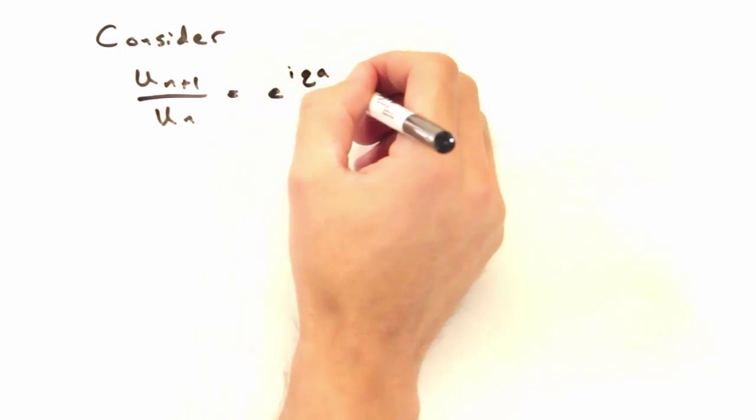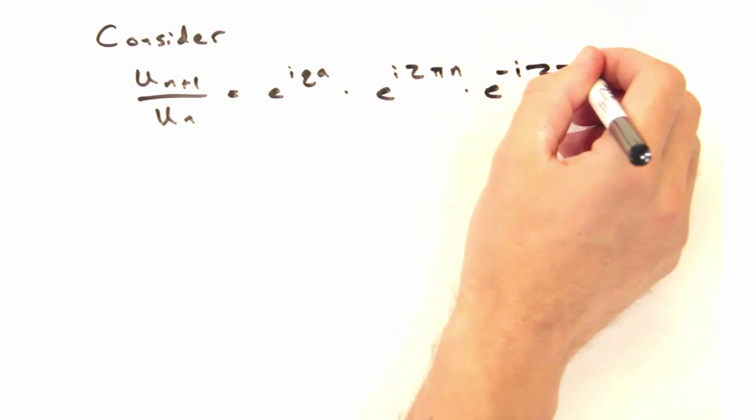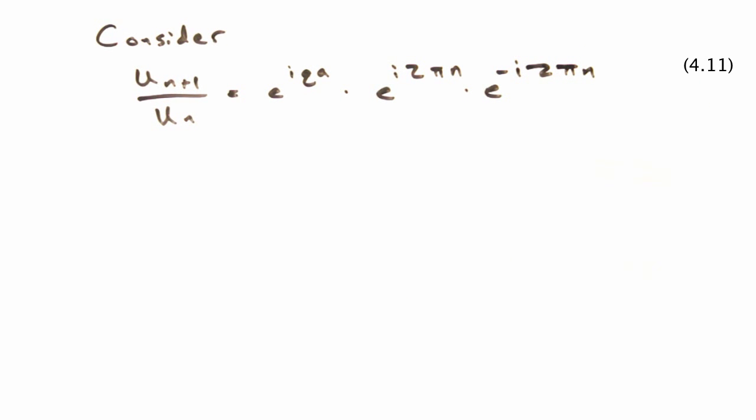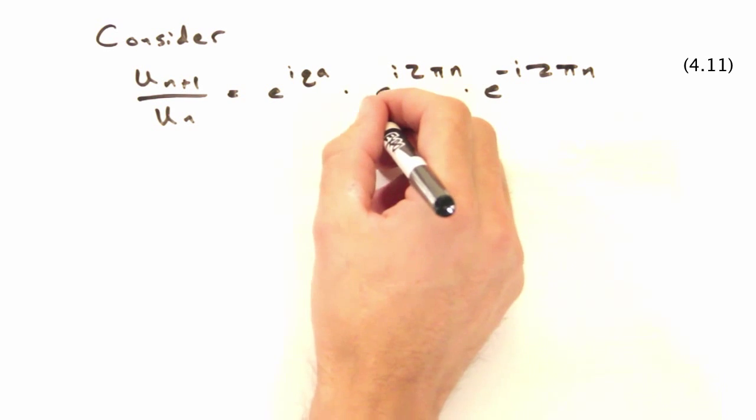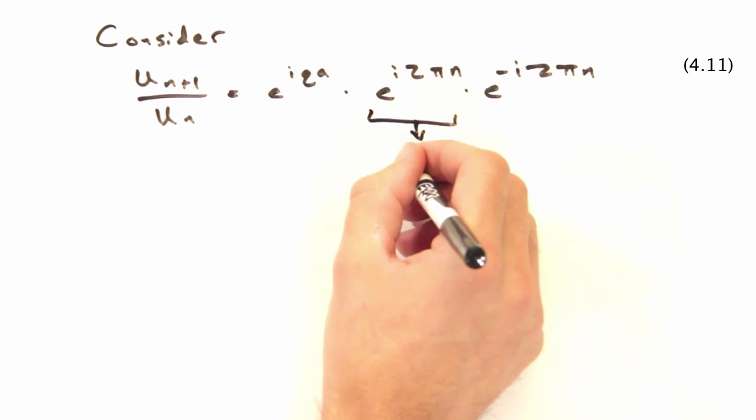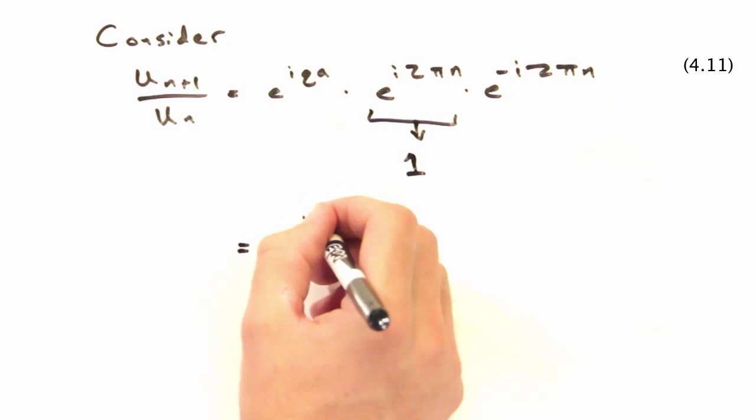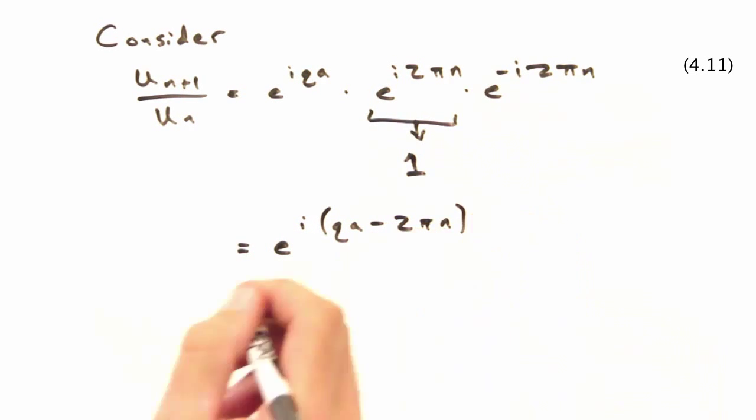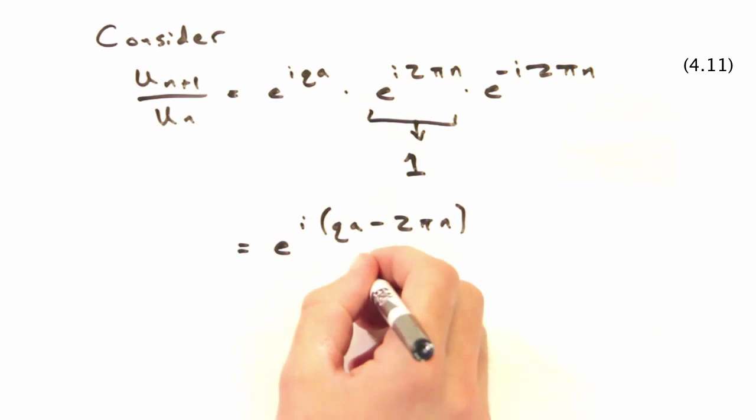To see this, let's go back to our original displacement ratio and multiply by e to the i 2 pi n and e to the minus i 2 pi n. e to the i 2 pi n would just be 1 since n is an integer, so we can scratch that. But now we have this other exponential.